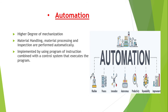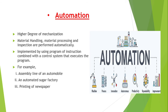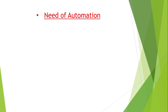Automation leads to increased productivity, improved product quality, and improved safety. It reduces manual and periodic inspection, reduces production cost, and is operator friendly. Examples of automation include assembly lines of automobiles, automated sugar factories, and printing of newspapers.